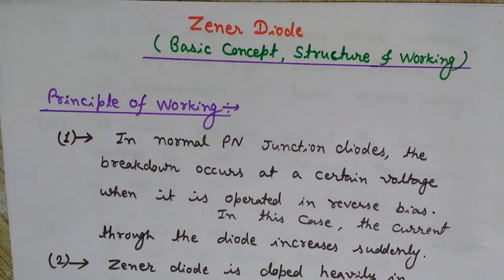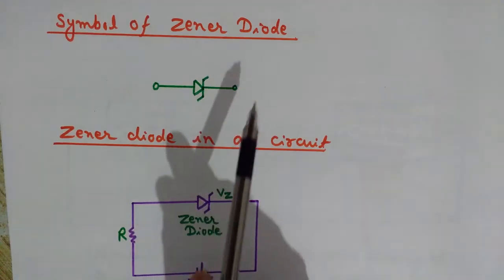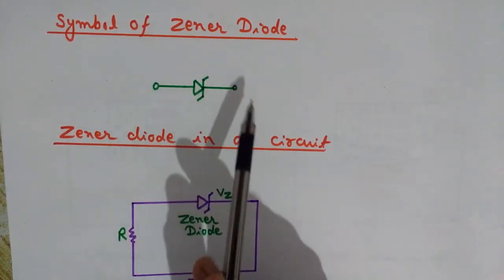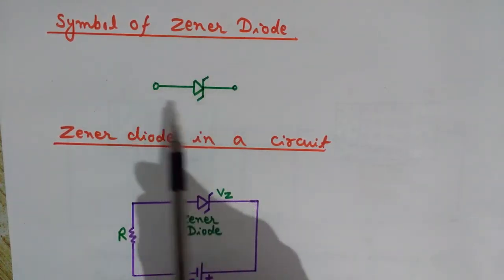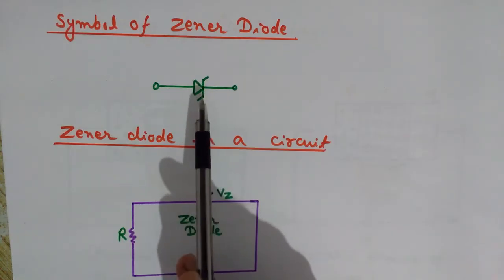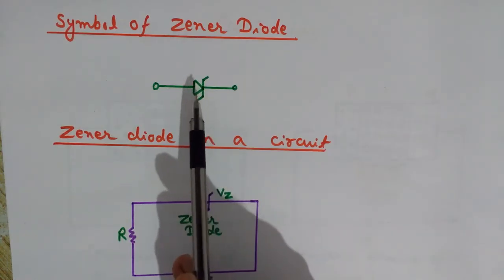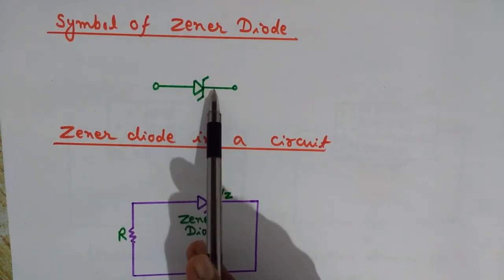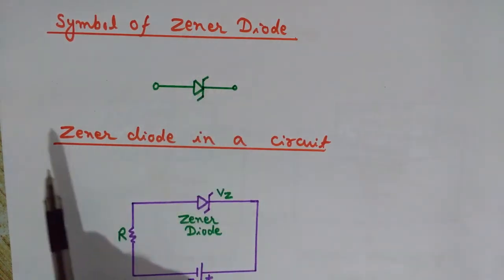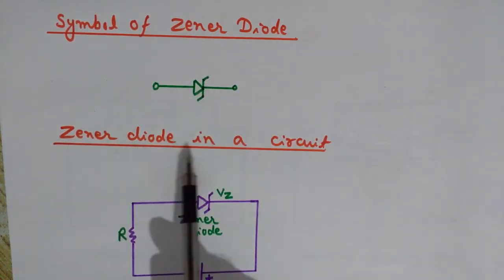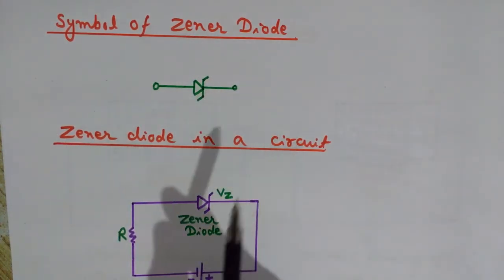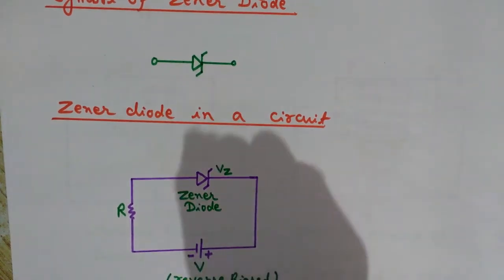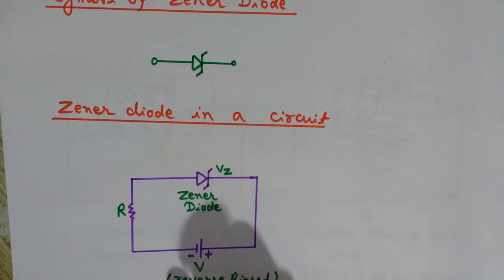The symbol of the zener diode has been shown here. Observe how it is different from the normal diode — this is the P side and here is the N side. This zener diode in a circuit has been used in reverse biasing.